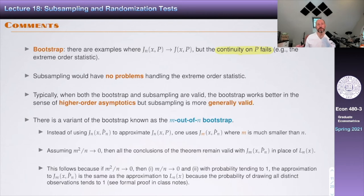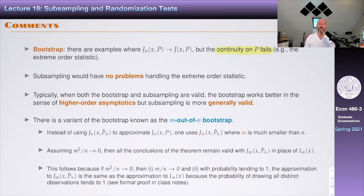The other consideration is that the bootstrap has essentially no tuning parameters — you just choose B large and it doesn't matter. For subsampling, you have to choose b and choosing b is not easy. There are some rules out there, but it turns out results may actually change when you change b. If you have a sample of 1000 and set b to 80 you get some numbers; change b to 100 and your numbers may change a lot. That's still an open question.